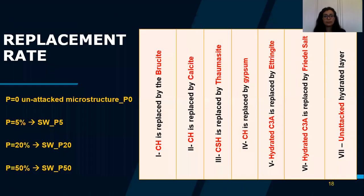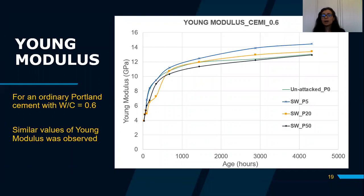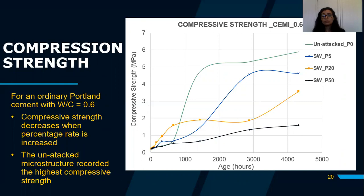The replacement rate specifies the degree of exposure of the microstructure to seawater. A higher replacement rate means the attacked microstructure is more exposed. Taking zone one as an example, a percentage P of portlandite is replaced by brucite. Four percentages were tested: 0%, 5%, 20%, and 50%, where 0% represents the unattacked microstructure. From the results, Young's modulus shows similar values across all cases, but compressive strength decreases as the replacement percentage increases, with the unattacked microstructure recording the highest compressive strength.